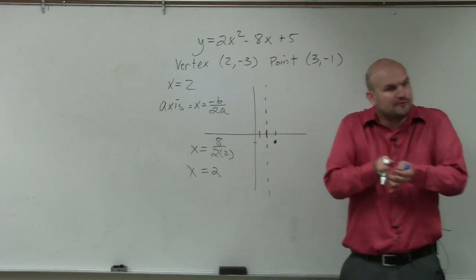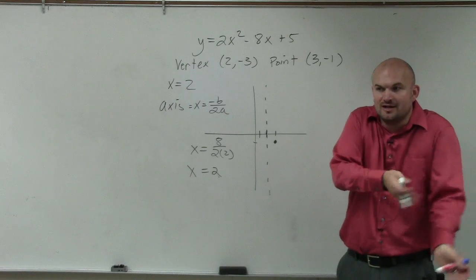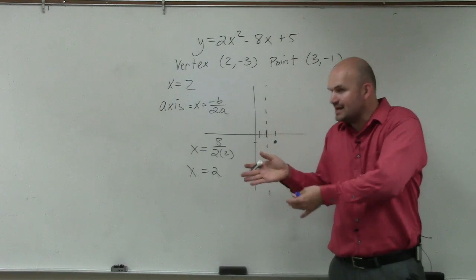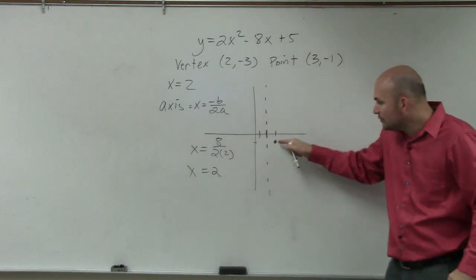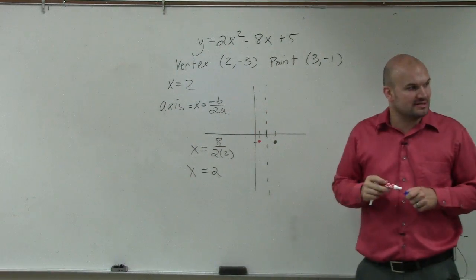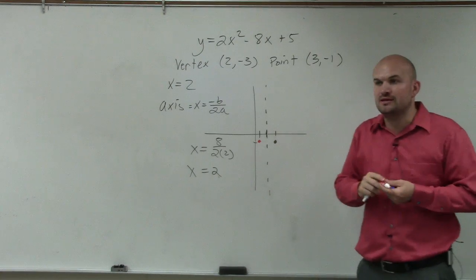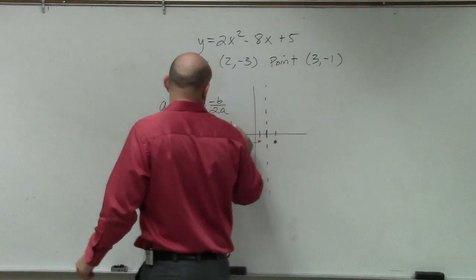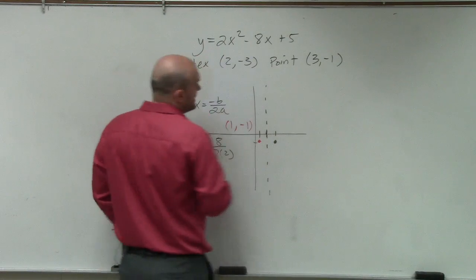when we're graphing, if we graph points on the left-hand side, we can reflect them over the right-hand side, right? So if I know that's a point, then I know that this point has to also be a point, right? It's reflection about the axis of symmetry. So another point would have been 1 comma negative 1.